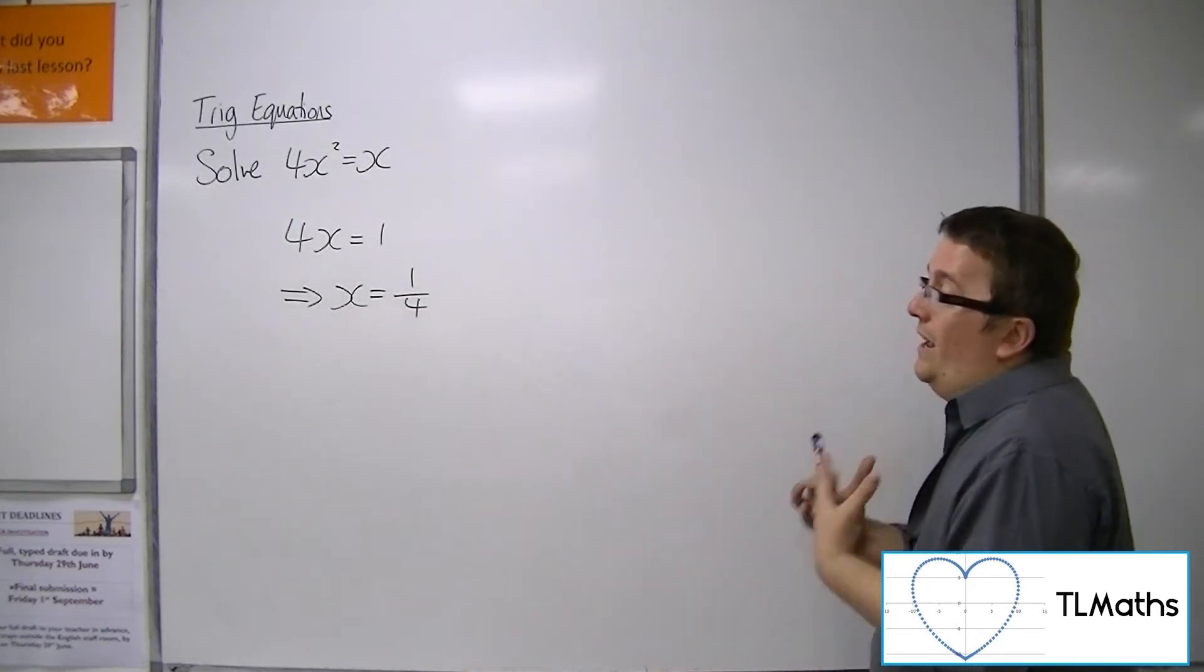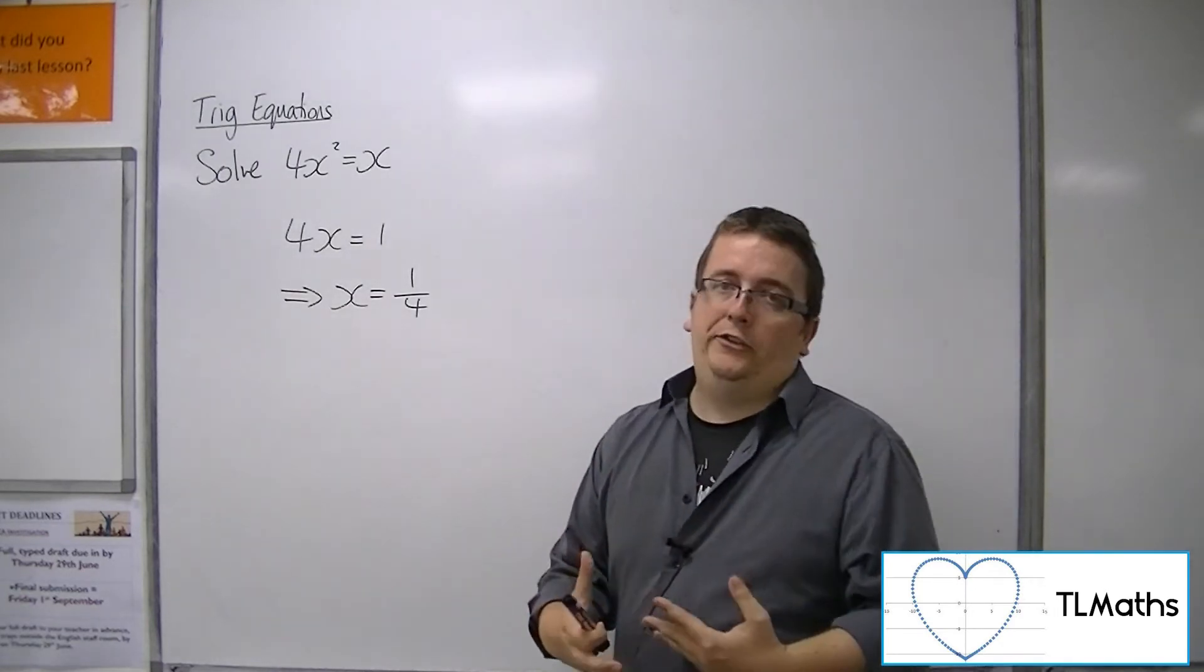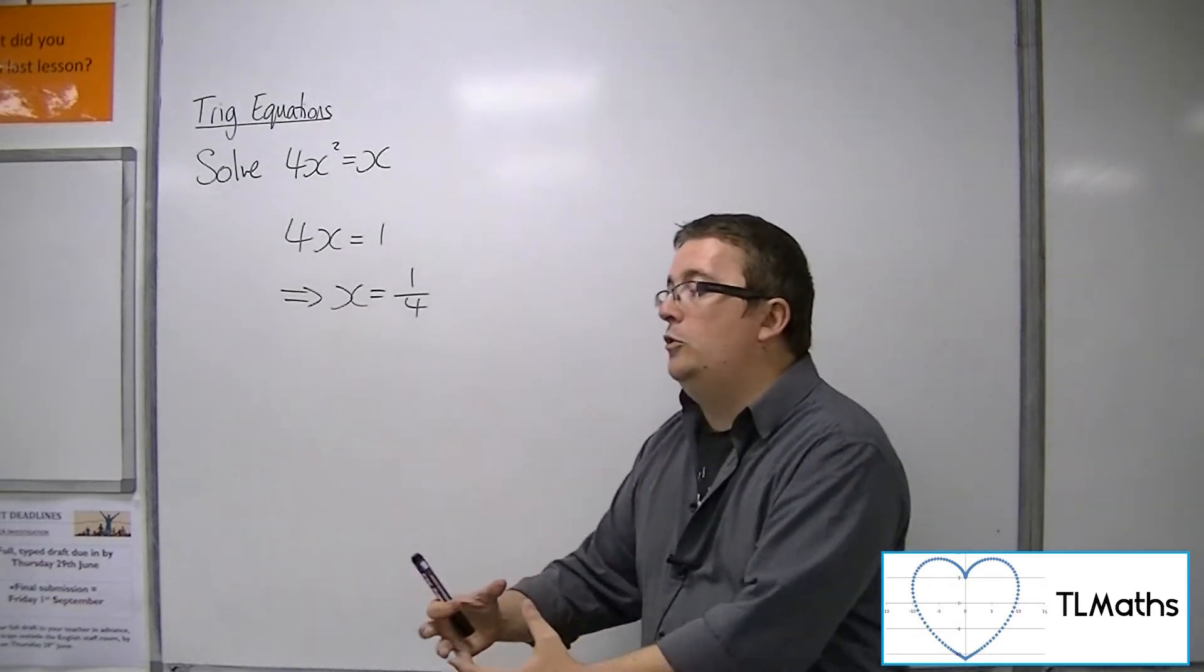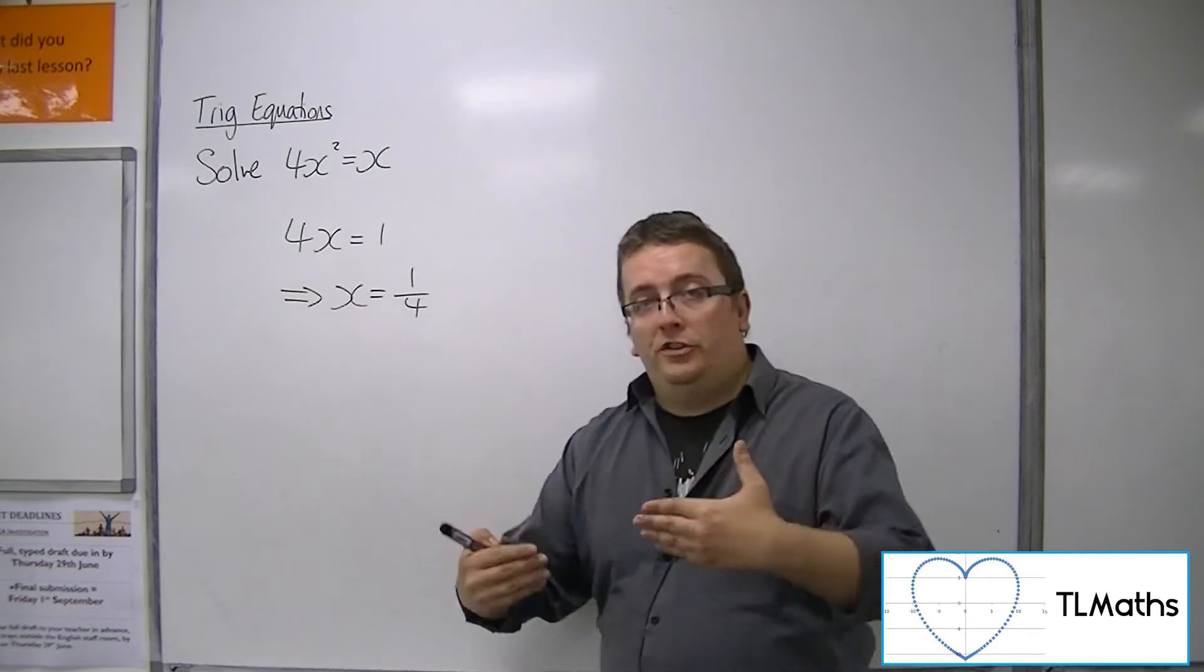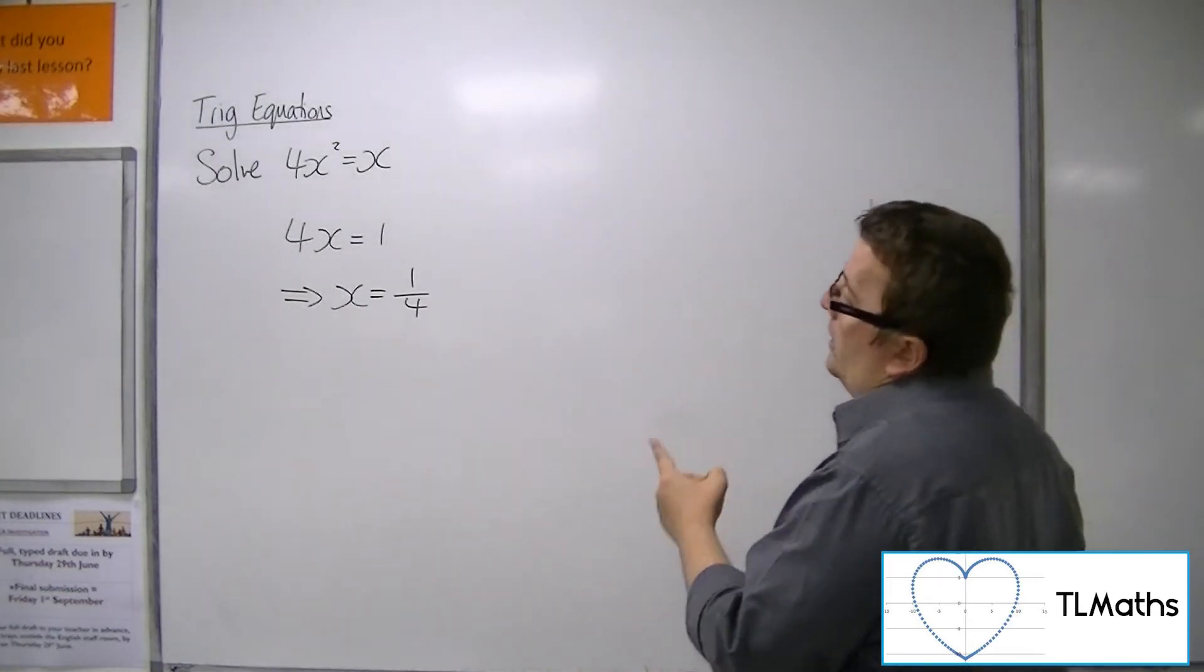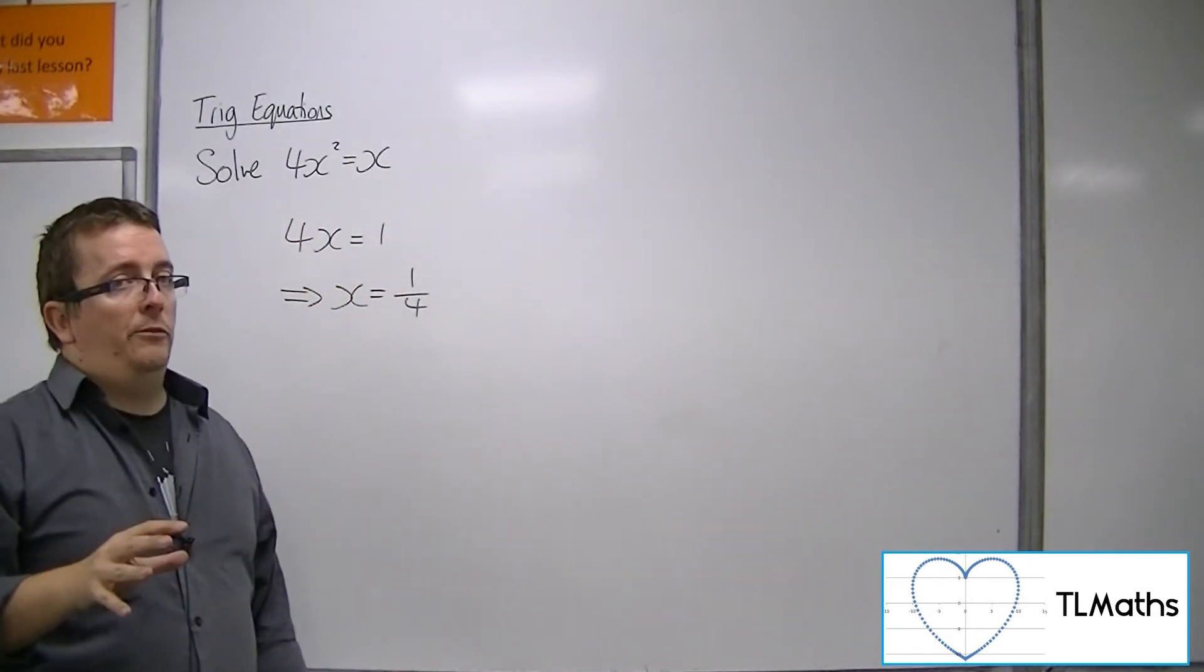So what's happened is that in dividing by x, you have lost a solution. And this is because you are going through a process where you're dividing by something that could be 0. So 4x squared equals x should not be solved using this method.